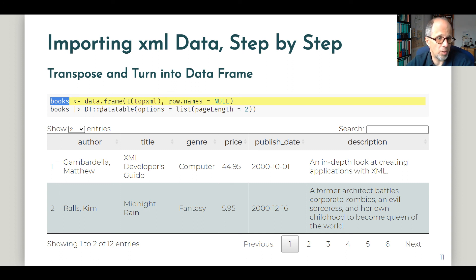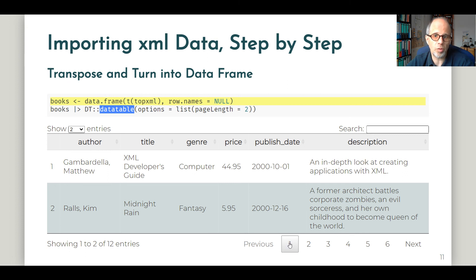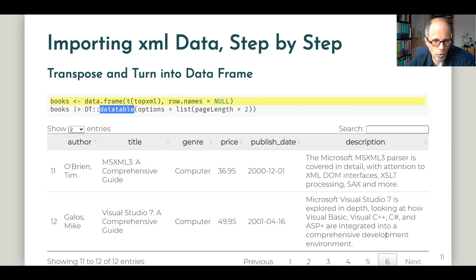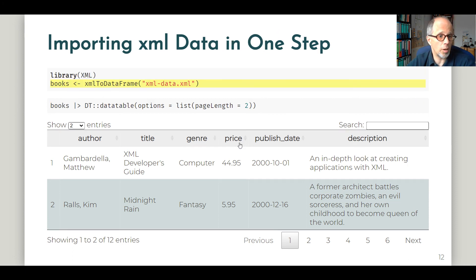I'm using the same data table function from the DT package again to display the data. We have the 12 books again — six pages, two books each per page — so we can navigate this. This is the format that we would really like to have in R to work with this data. If there's just one takeaway you want to have from this video, it's the one-liner convenience function that we saw in the beginning.